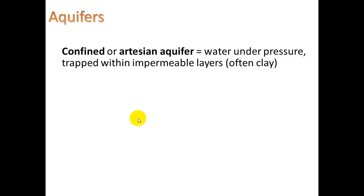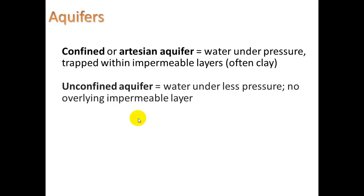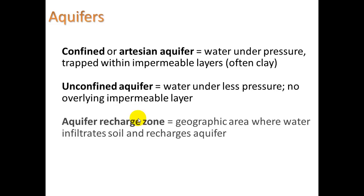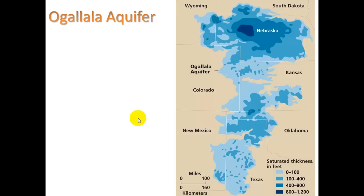A confined or artesian aquifer is water under pressure, trapped within impermeable layers — often clay or impermeable rock. An unconfined aquifer is water under less pressure with no overlying impermeable layer. The aquifer recharge zone is the geographic area where water infiltrates soil and recharges the aquifer — a beautiful thing, though it's not happening fast enough because we are withdrawing water too quickly.